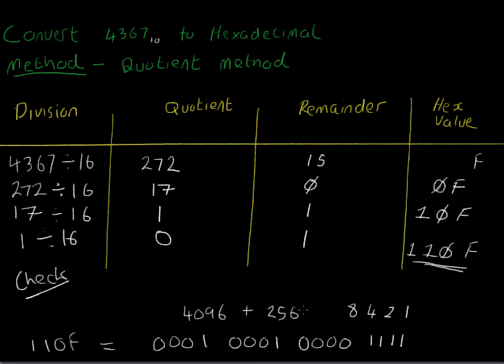Now, what I'm going to do is I'm going to add these values together. When I add these values together, what you'll discover is that the answer is 4367. And that proves that 4367 is equivalent to 110F in hexadecimal, which, remember, is base 16. Thank you.